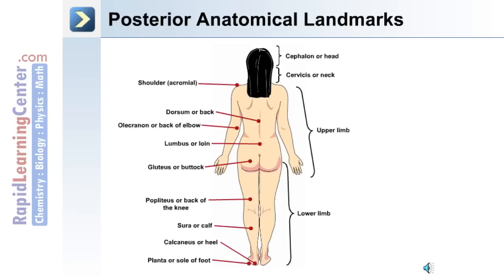We'll use this image to describe the posterior anatomical landmarks. The upper limb is the arm and the lower limb is the leg. The cephalon or head and the cervix or neck region — the shoulder can also be called the acromial. The dorsum or back covers the middle of the back, and the lower back is the lumbus or loin.